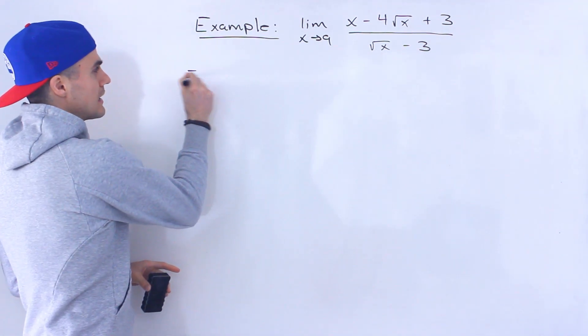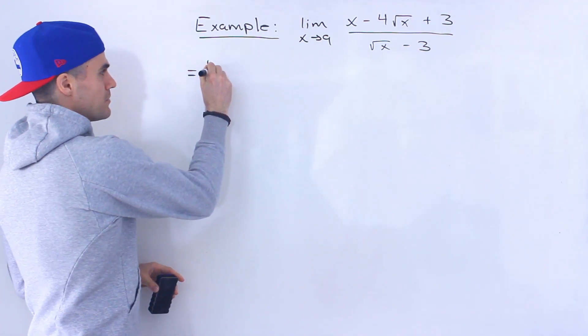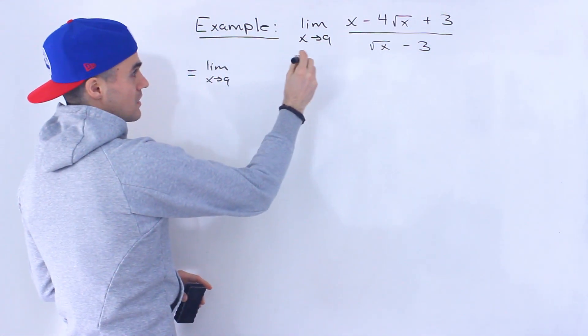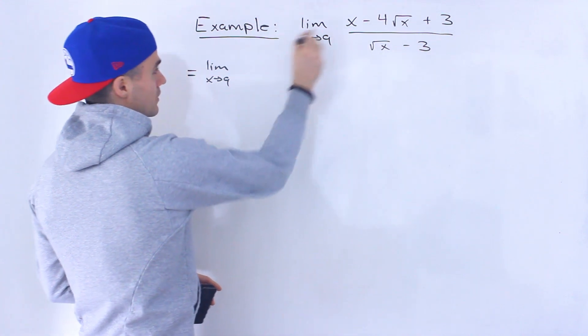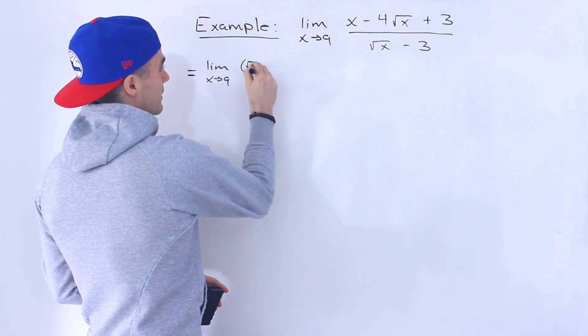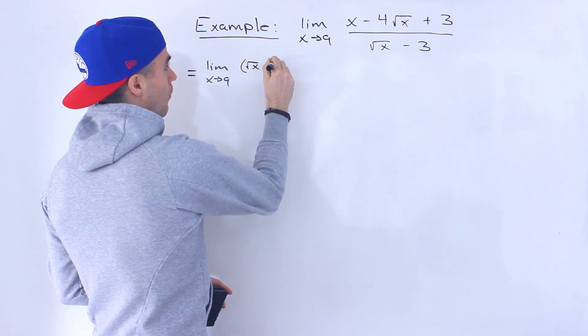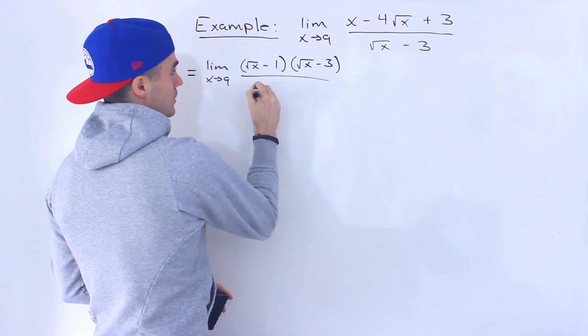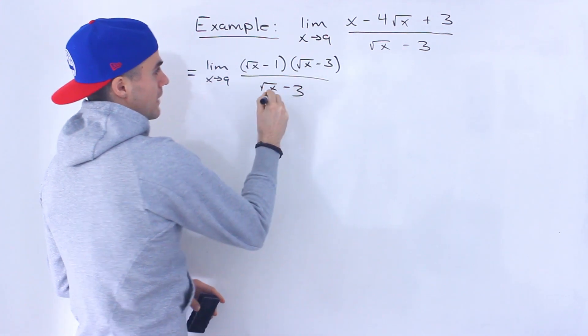So the less obvious one in my opinion is, if you notice, you can actually factor the numerator. And the numerator factors into root x minus 1 and then root x minus 3. And that's still going to be all over root x minus 3.